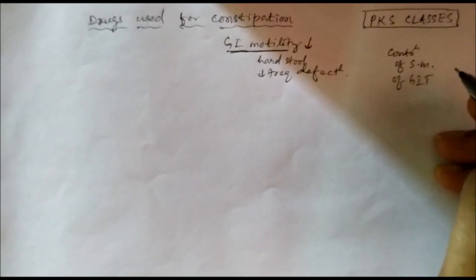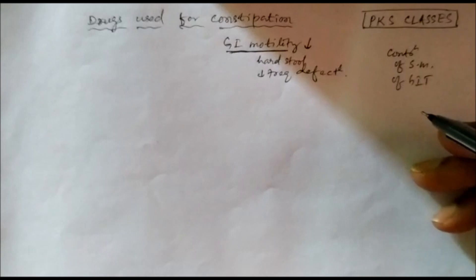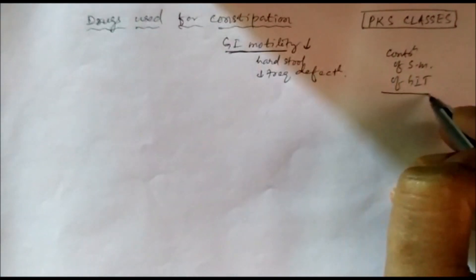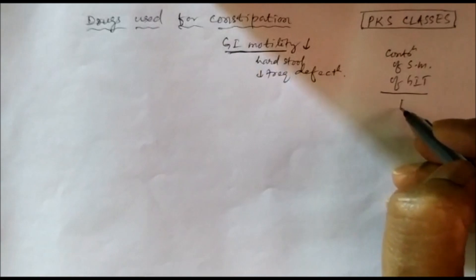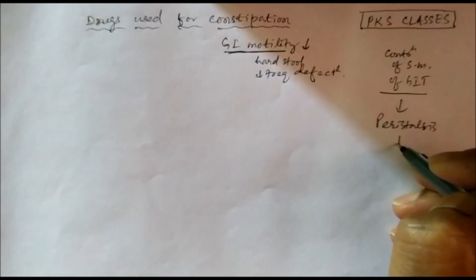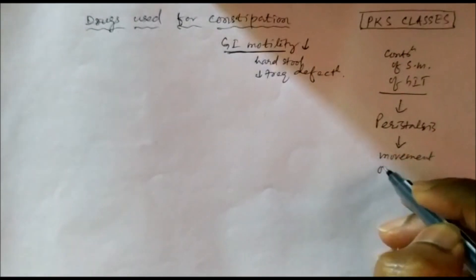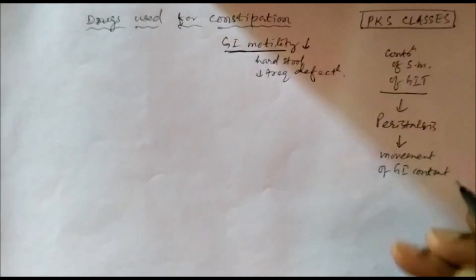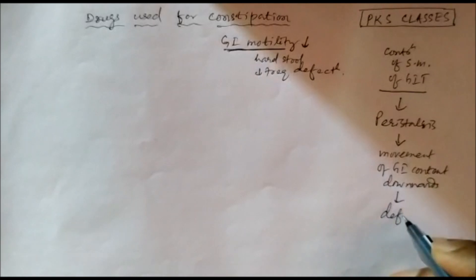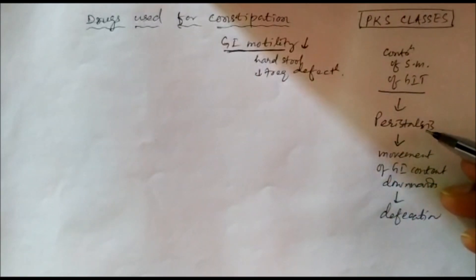The GI contents move from the esophagus to the stomach, to the small intestine, to the large intestine, and finally are excreted through the rectum and anus. This motility is called peristalsis. Peristalsis causes the movement of GI content downwards, and that causes defecation. So any drug which can induce peristalsis can be used for constipation.